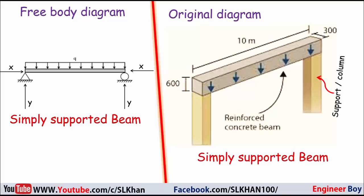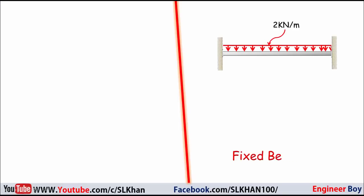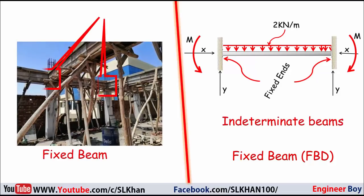Sometimes a beam is fixed at both ends, which is known as a fixed beam. This type of beam can be indeterminate because it has both moment and force reactions at its supports. This type of beam has no rotation at its ends, unlike a simply supported beam.